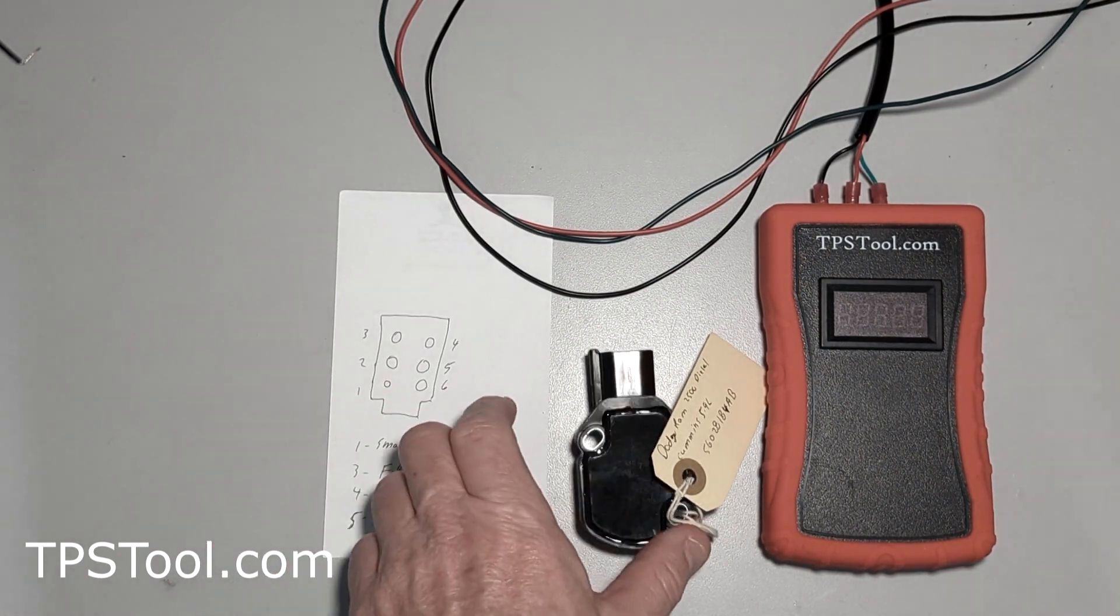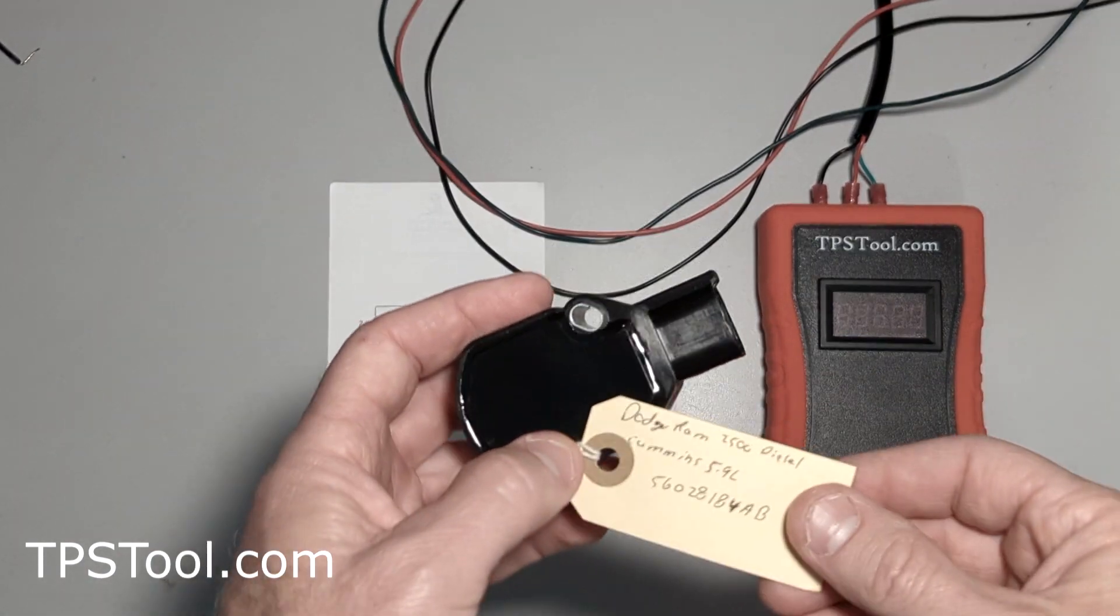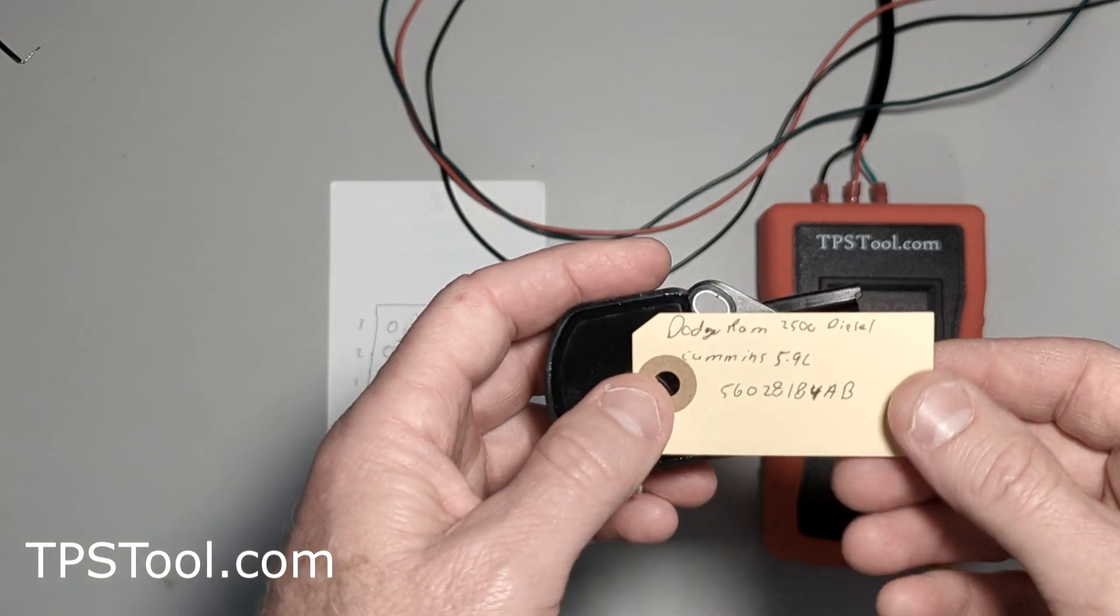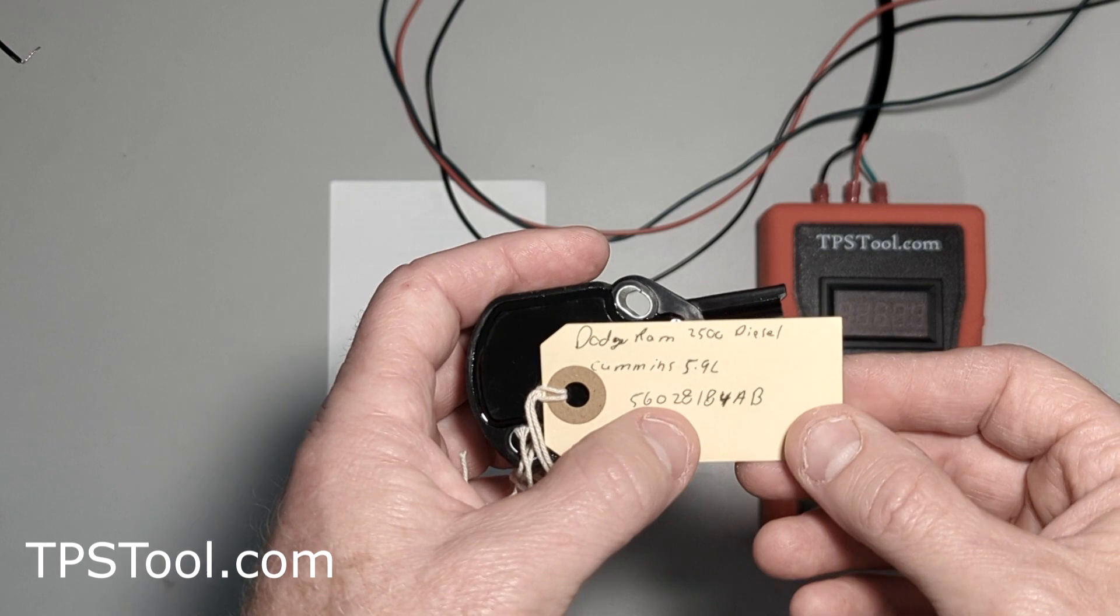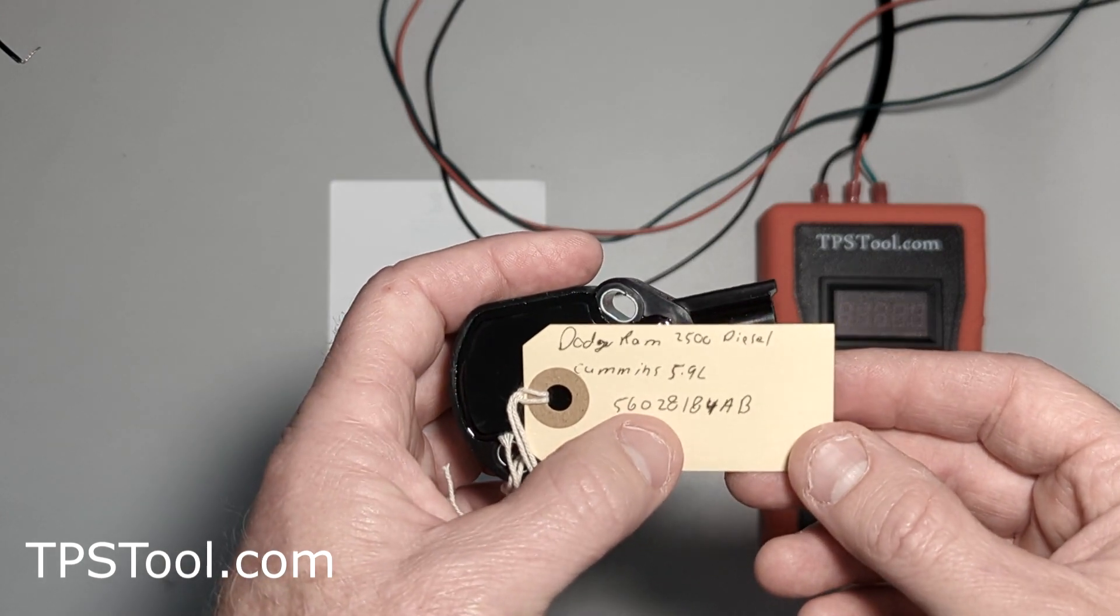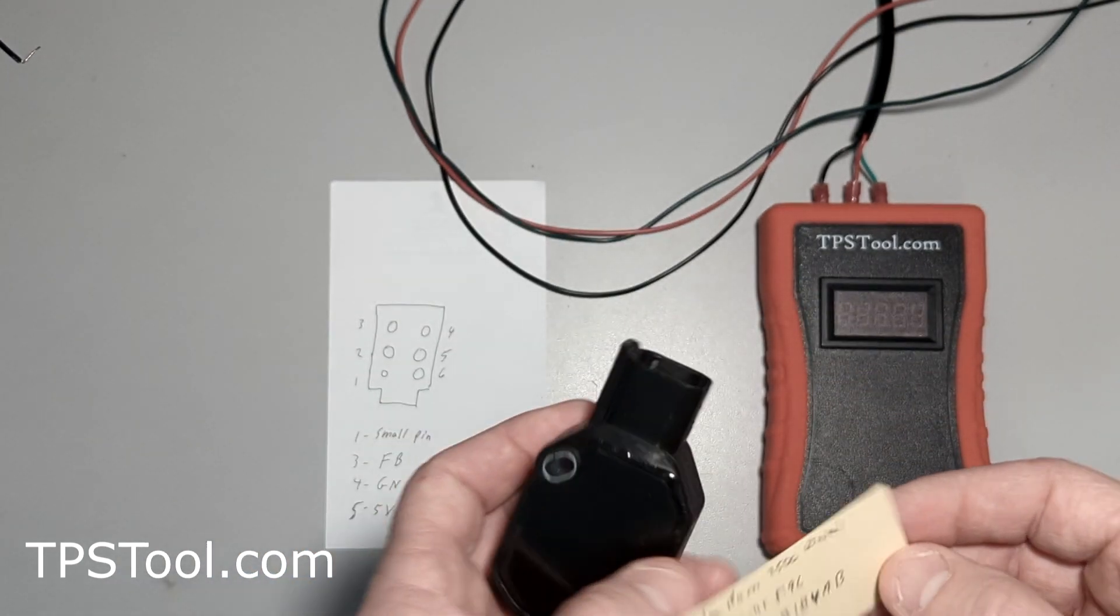Hey y'all, Matt from TPSTool.com. We've got an interesting one here for you. This is from a Cummins diesel, a 5.9 liter. Part number is 560-281-84AB. So if you're using that part number, this is what you can do.